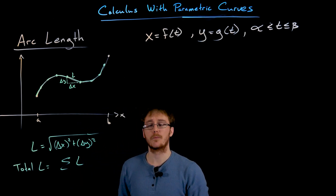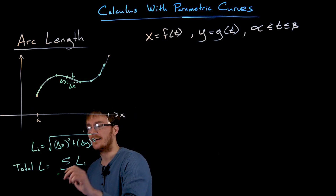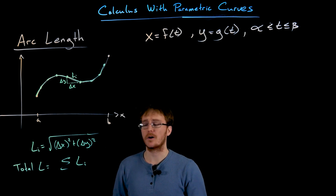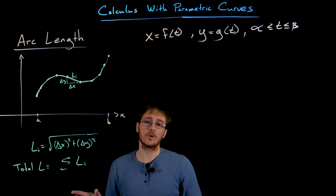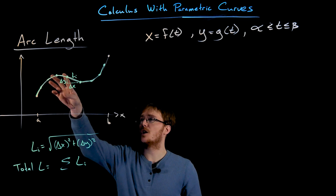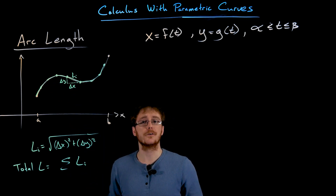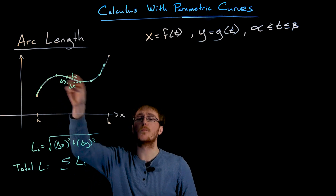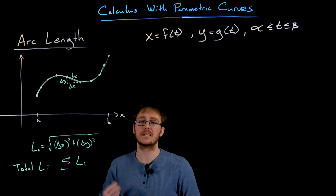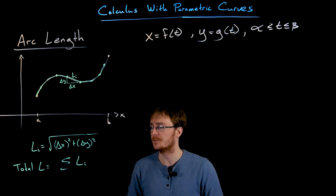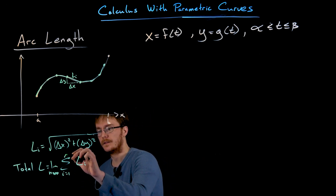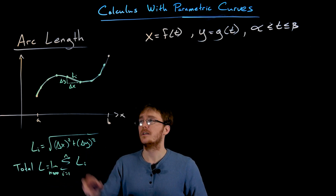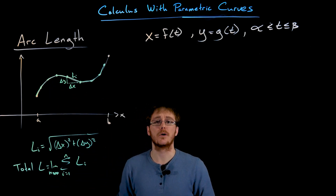Being a bit informal here, the total length of our curve can be approximated by the sum of all these small hypotenuse line segments. To improve the approximation we use more line segments, so delta Y and delta X become smaller. We eventually have to take the limit as n approaches infinity of the number of line segments we're using in our approximation.